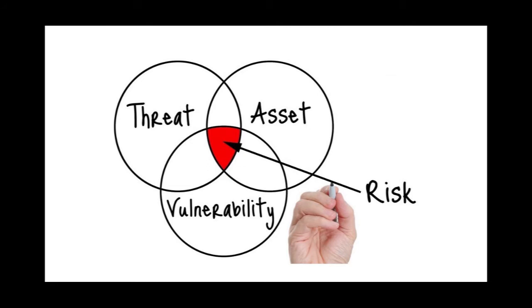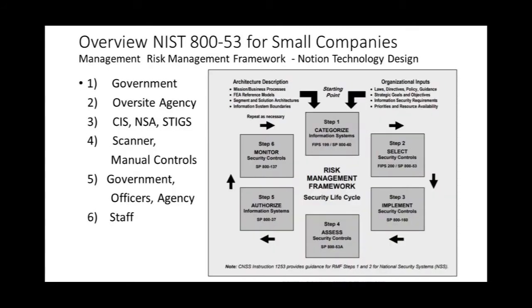This is the flowchart for the risk management framework. Step one is categorizing the system. Step two is selecting your controls. Step three is implementing your controls. Step four is assessing your controls. Step five is authorizing your information system. Step six is monitoring your security controls.